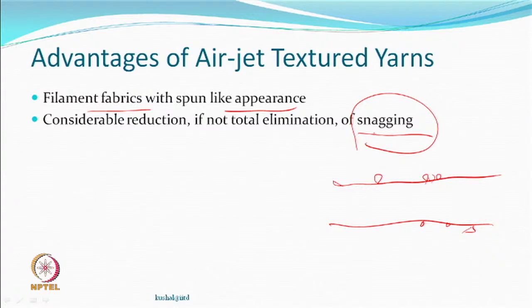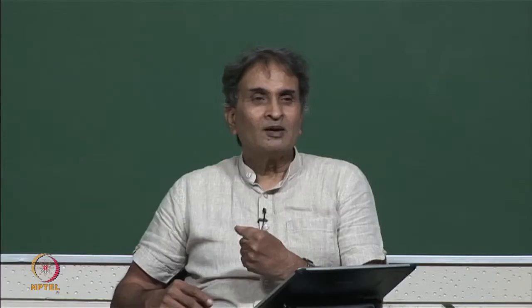Air jet textured yarn will not snag — a good one will not, a bad one will do everything — because the loops are very firmly held and you cannot pull them out without applying significant stress. If there is no pull-out, the surface looks as it is. And since there are already loops all over, if one more appears you do not even notice. So the second advantage is considerable reduction, if not elimination, of snagging.